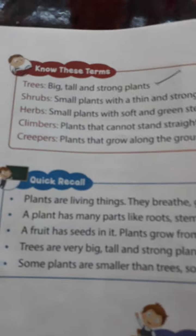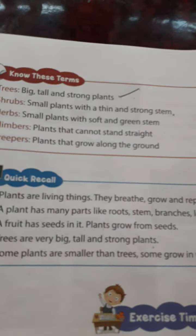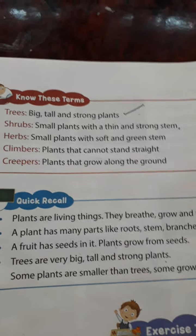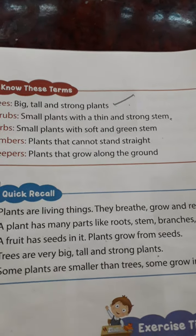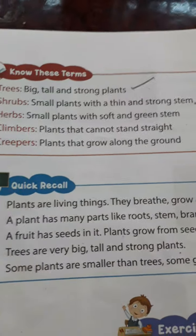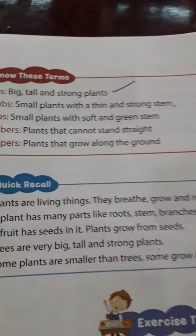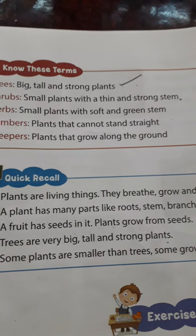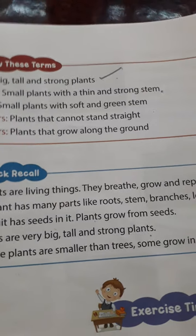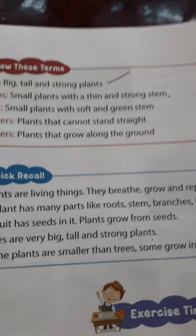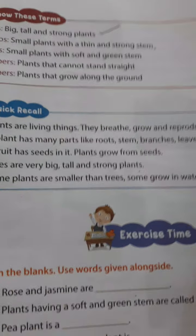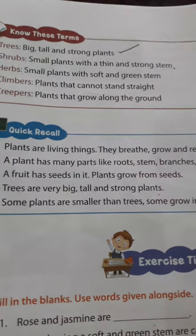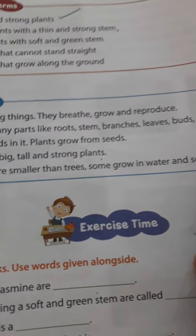Quick recall: big, tall, and strong plants are called trees. Shrubs are small plants with a thin and strong stem — example: rose and jasmine. Herbs are small plants with a soft and green stem — example: coriander and mint. Climbers are plants that cannot stand straight. Plants are living things — they breathe, grow, and reproduce. Plants have many parts: roots, stem, branches, leaves, and buds.